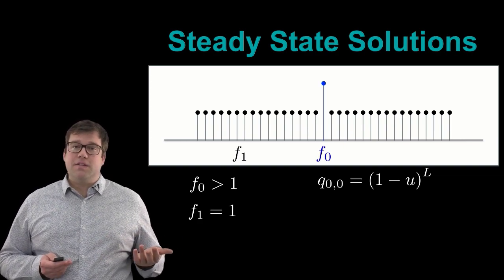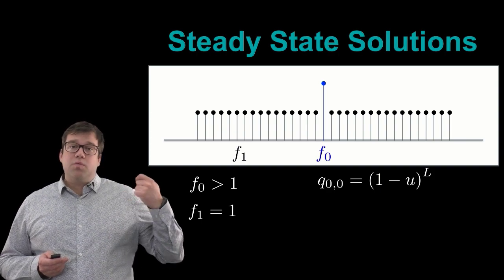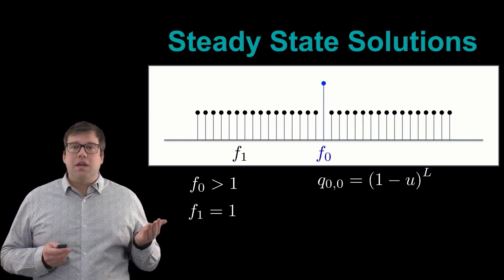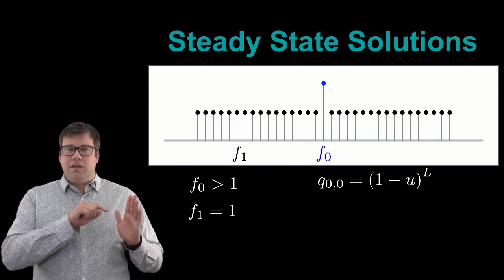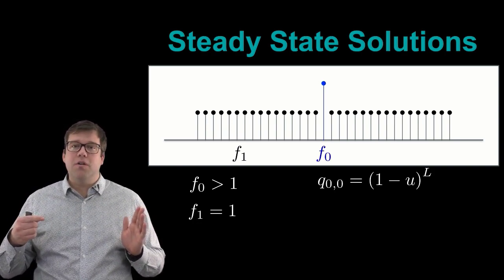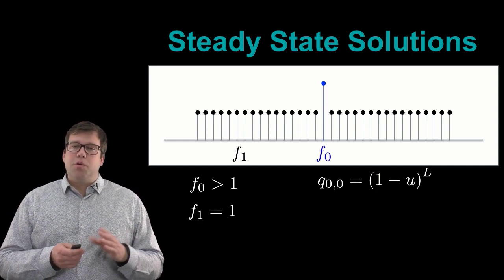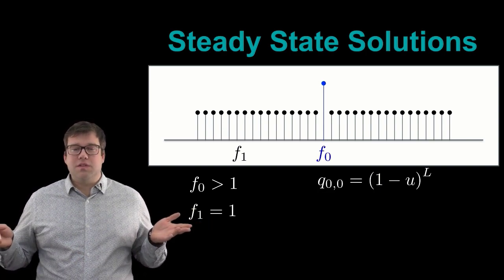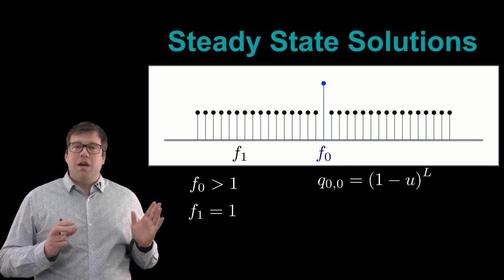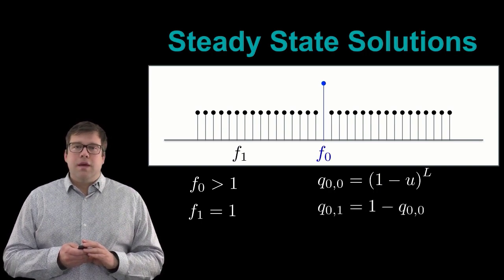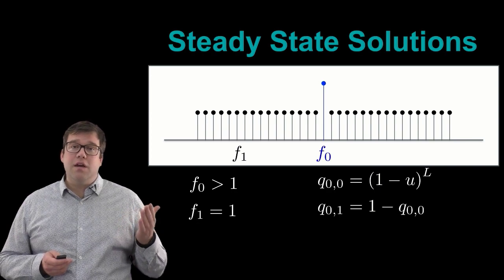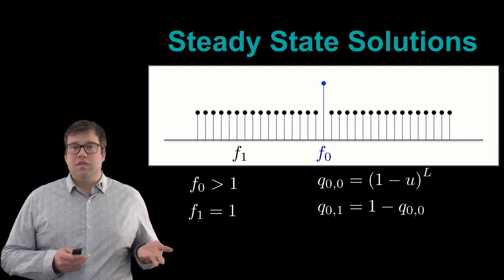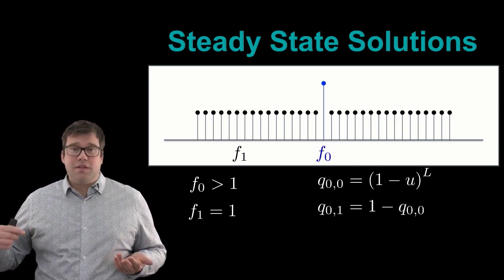For the mutation rates, we first consider how likely it is for the master sequence to perfectly replicate itself — that is, to replicate with no mutation. This probability is simply one minus the point-wise mutation rate mu, raised to the power L, where L is the overall sequence length. So the probability of perfect replication, q₀₀, equals (1 − μ)^L. The probability of mutating from f₀ into all other f₁ sequences is then one minus q₀₀.